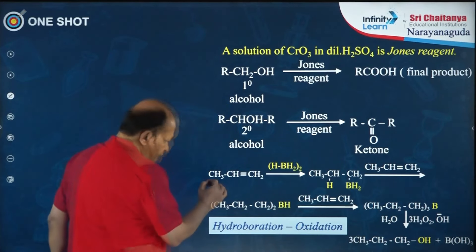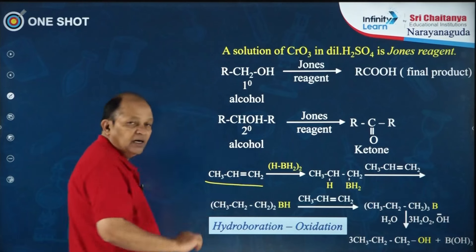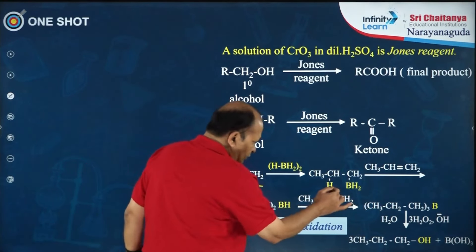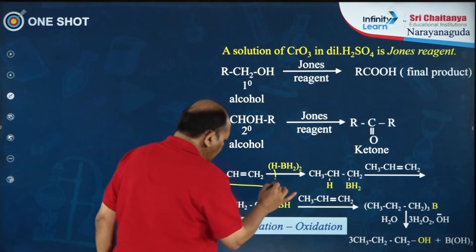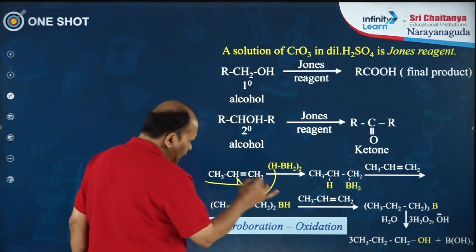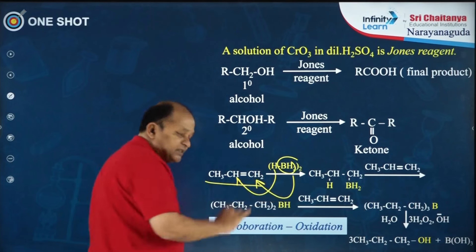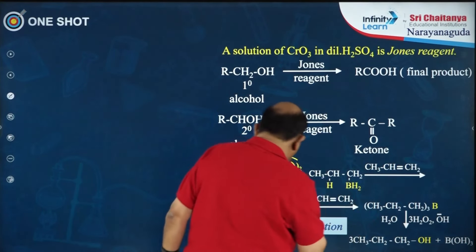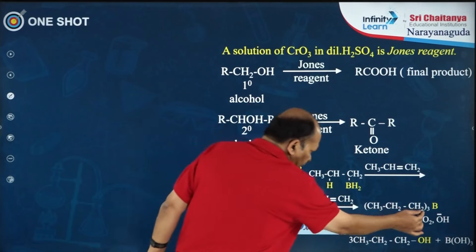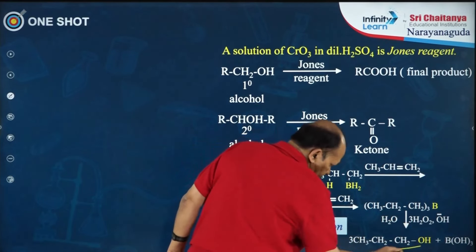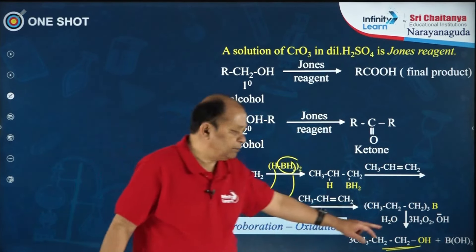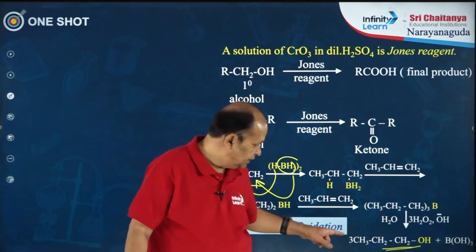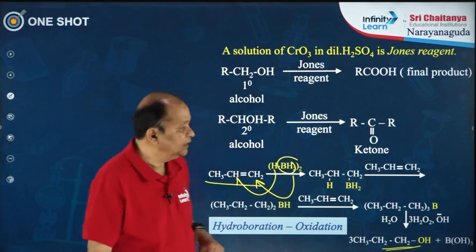Another interesting reaction is hydroboration-oxidation. An unsymmetrical alkene treated with diborane — hydrogen attacks one carbon and BH2 goes to the less sterically hindered carbon. After three moles the trialkylborane intermediate on hydrolysis gives the product n-propyl alcohol. This is the anti-Markovnikov product you get in this reaction when starting with an unsymmetrical alkene.